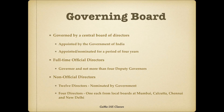The RBI is governed by a central board of directors, appointed by the government of India for a period of four years. There is a governor and not more than four deputy governors who are the full-time official directors. Further, there are non-official directors, of which 12 are nominated by the government and four directors are from the local boards at Mumbai, Calcutta, Chennai, and New Delhi.